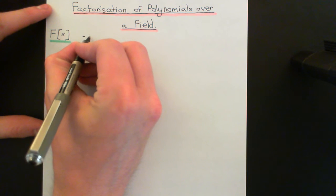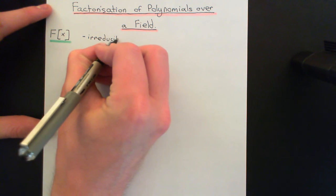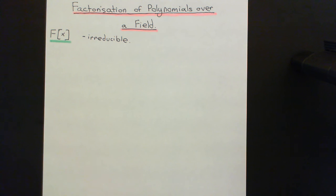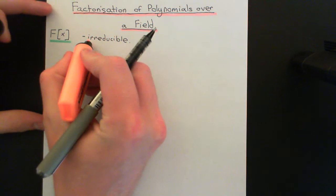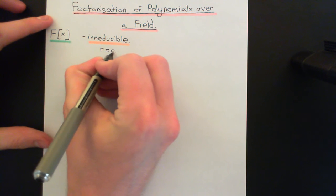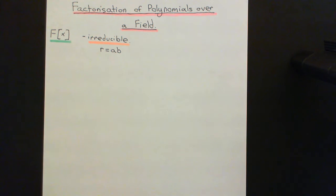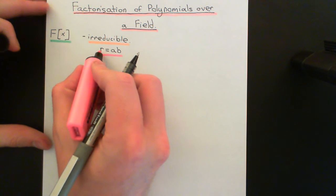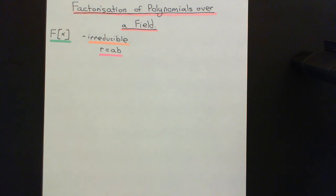Let me remind you of what irreducible means in a general ring and then we'll apply it to the ring of polynomials over the field F. An irreducible element in a general non-zero commutative ring is a non-zero non-unit element. The definition of reducible and irreducible cannot be applied to unit elements or to zero — only elements that are not units can be called either reducible or irreducible. If it's irreducible, any product A times B that equals R must have one of A or B being a unit, making the other an associate of R.